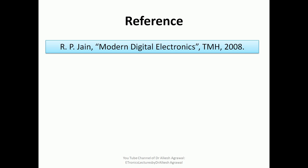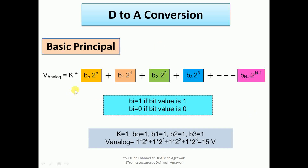Let us discuss the basic principle. If we have a binary input, say 0 or 1, the simple conversion requires converting the binary value into its decimal equivalent. The least significant bit is multiplied by 2 power 0, the next bit by 2 power 1, then 2 power 2, 2 power 3, and so on up to 2 power n minus 1. The bit value bi is 1 if the bit is 1, and bi is 0 if the bit is 0, so that term is removed from the expression.